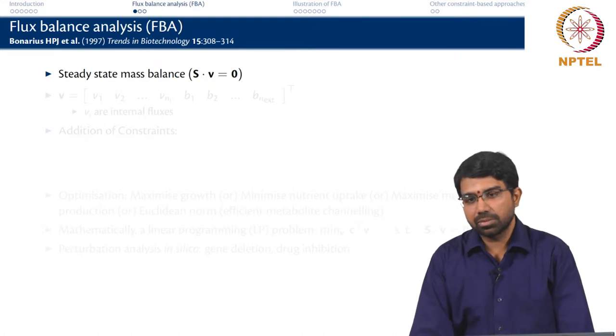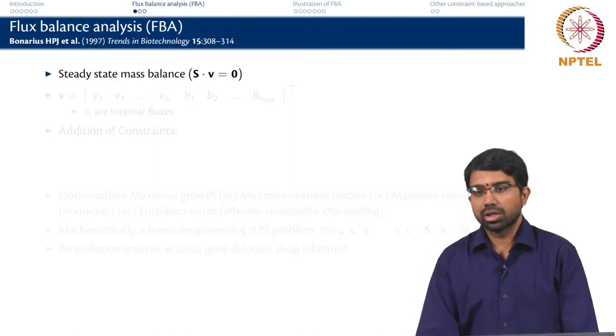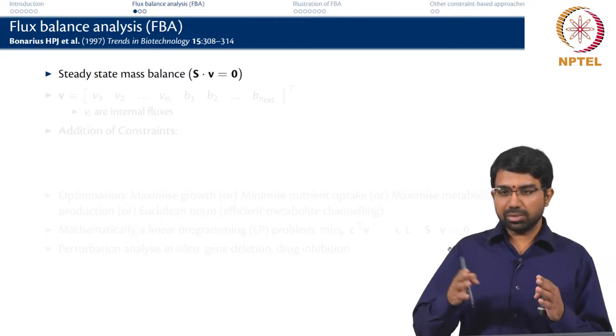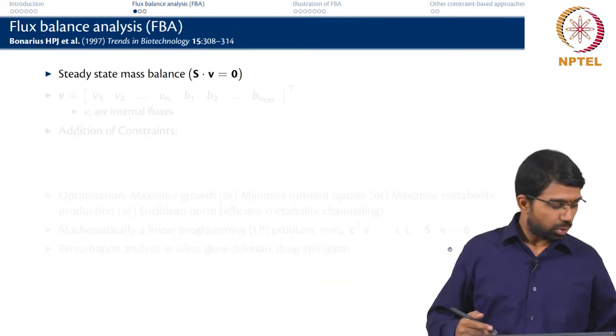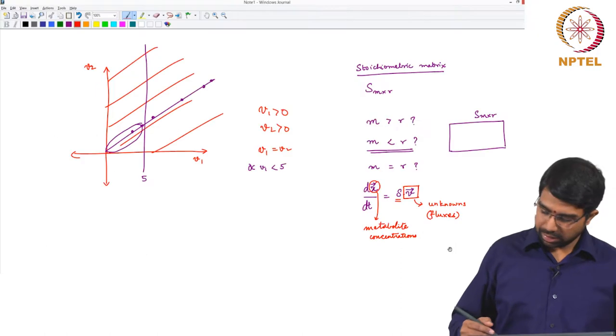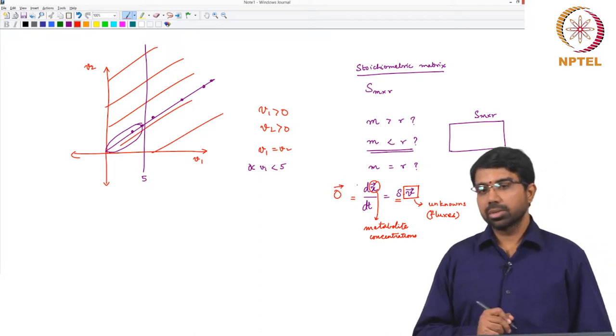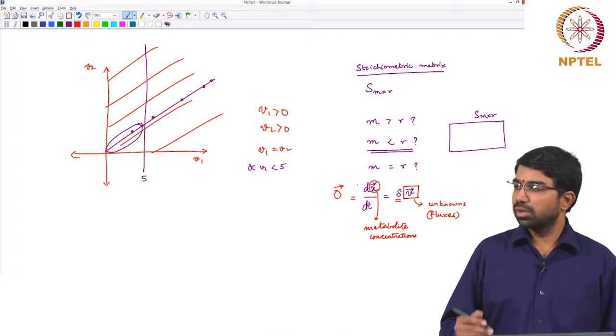It involves a steady state mass balance. What is steady state? There is no accumulation. So whatever substance is coming in, there are some conversions and at steady state substances are going out. What would be dx by dt under steady state? It will be equal to 0. The rate of accumulation of every metabolite will be 0.